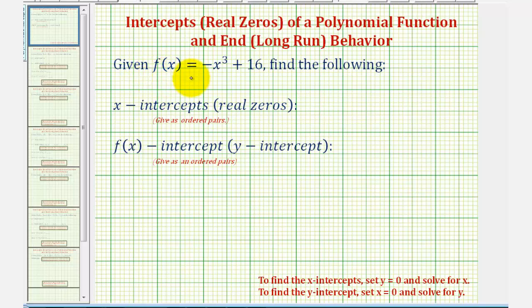We're given the polynomial function f of x equals negative x cubed plus 16, and we're asked to find the x-intercepts, which could also be referred to as the real zeros or real roots of the polynomial function, and then asked to find the f of x-intercept, which could also be referred to as the y-intercept.